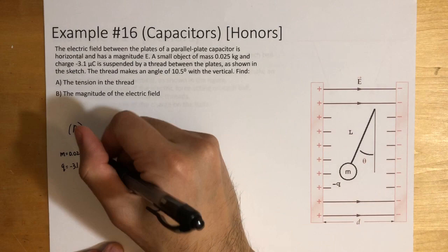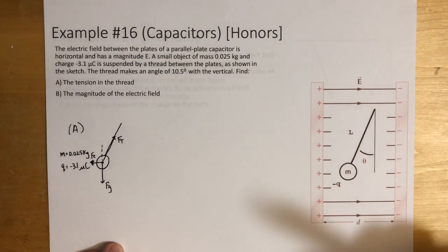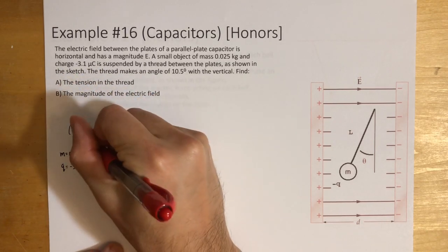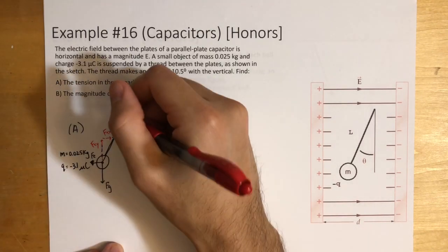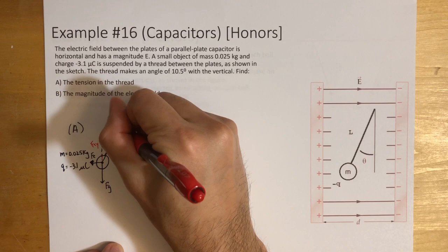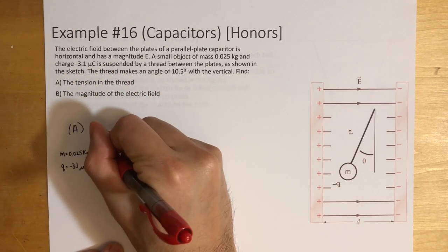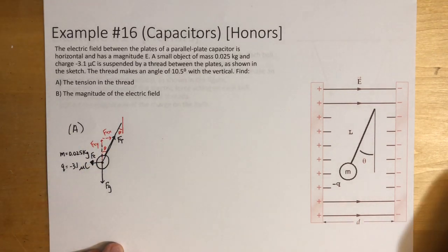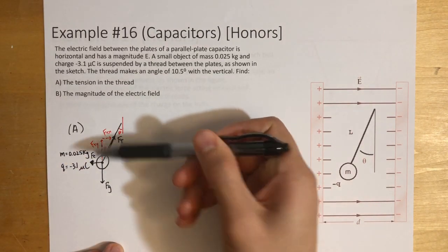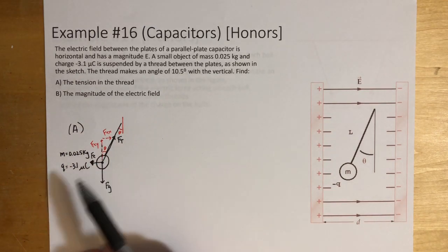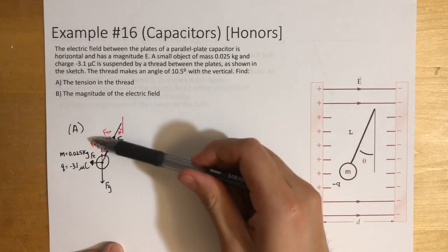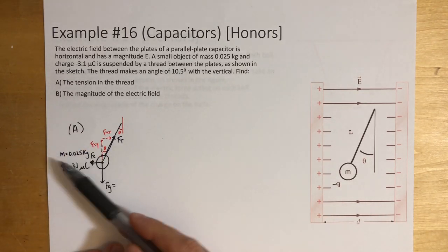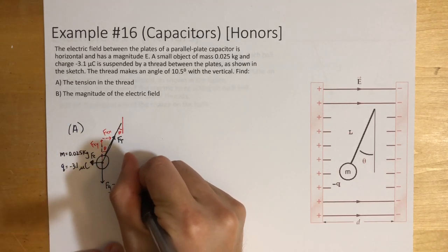For the components, we have force of tension in the x direction and force of tension in the y direction. This angle is 10.5 degrees, which is the same on both sides. Since this is equilibrium — it's not moving up, down, left, or right — everything in the y has to cancel. So the force of tension in the y equals the force of gravity, which is 0.025 times 10 = 0.25 newtons.